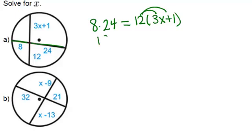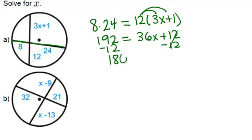So we have 192 equals 36X plus 12. So we'll minus 12 and get 180 equals 36X, which means that X equals 5.